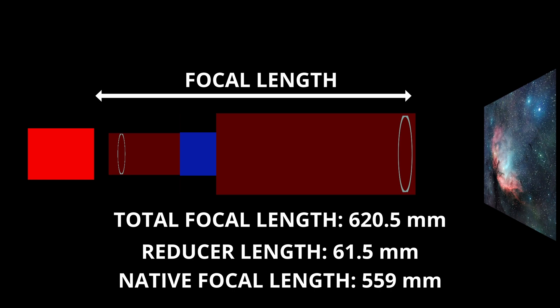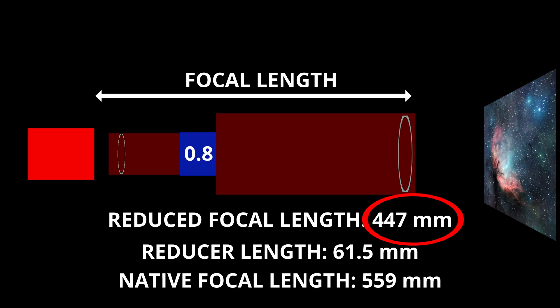After all, with the reducer physically attached to the telescope, the light path, or distance that light must travel from the primary lens to the focal plane is now longer. But the Williams Optics reducer actually reduces the focal length by 0.8, drawing it down to 447mm of focal length. Even though the reducer quite literally lengthens the telescope and the path the light must travel, from where it enters at the primary lens to where it comes into focus at the focal plane, by 61.5mm, the focal length is shortened to 447mm. So this begs the question, how does the reducer work its magic?